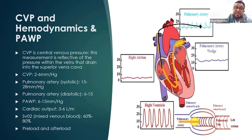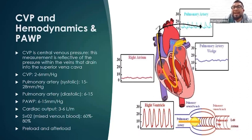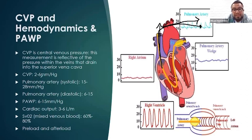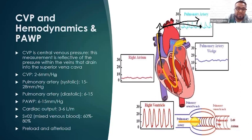CVP is important because if somebody has fluid volume overload or right-sided heart failure issues, the blood will back up into those locations — that's why we need CVP monitoring. Normal CVP is 2 to 6 millimeters of mercury. With heart failure, it's beyond 10.